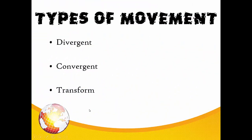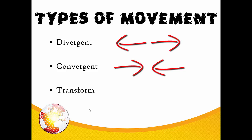There are three ways that tectonic plates move: divergent, convergent, and transform. In all three cases, the movement is caused by the action of the mantle below the plate.